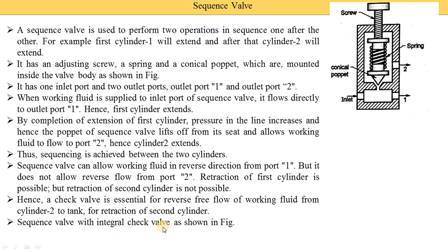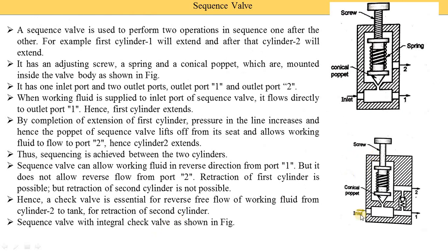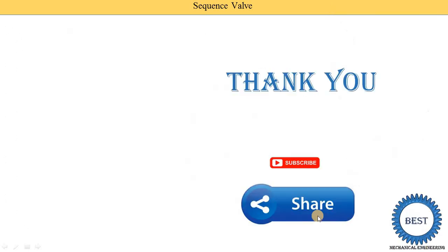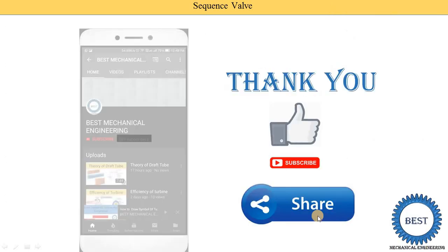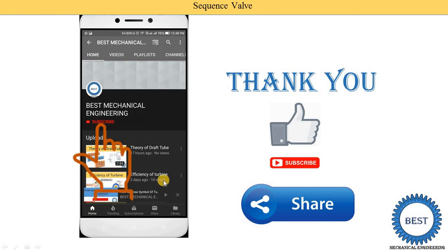A sequence valve with an integral check valve is shown in this figure. In this image, between outlet port one and outlet port two, one check valve is provided. During retraction of cylinder two, oil comes into port two and from port two it is supplied to port one, and from port one it goes back to the tank or reservoir. Thank you for watching this video. If you learned something, please like the video and subscribe to the channel for more videos related to hydraulics and pneumatics as well as other subjects of mechanical engineering.